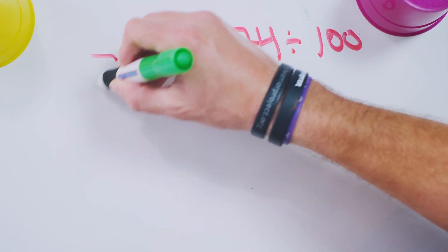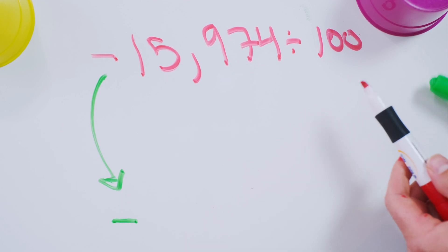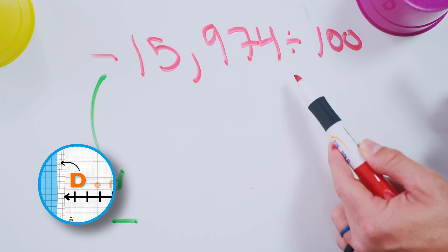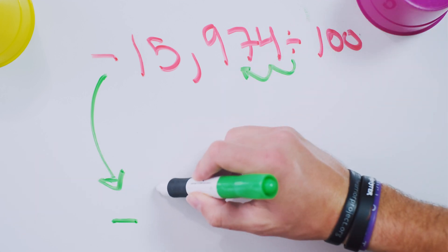Don't worry about that negative sign. We're going to bring that down here. We'll deal with him later. Now you have two zeros here, so you're going to move the decimal over two places. That's all you're going to do. So this is.